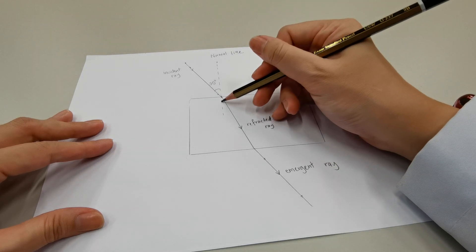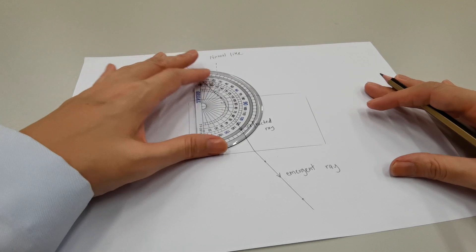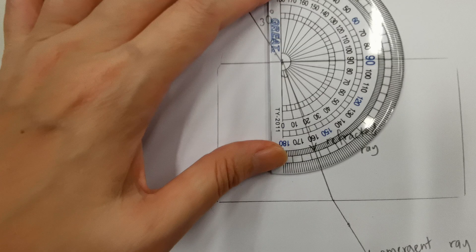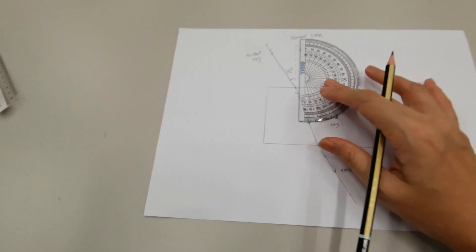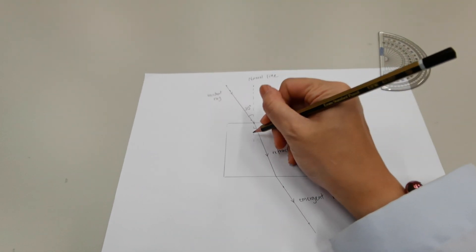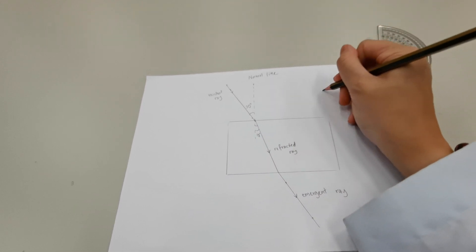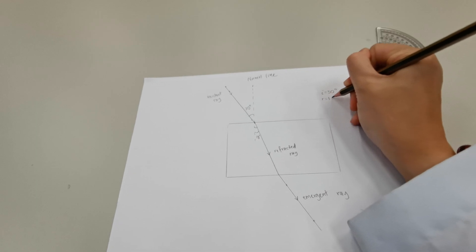The angle between the normal line and the refracted ray is the refracted angle. To measure the refracted angle, we just need to use a protractor. As you can see, the refracted angle in this practical which I have conducted is 18 degrees. I'm going to write the value of the refracted angle here as 18 degrees. The incident angle is 30 degrees and the refracted angle is 18 degrees.